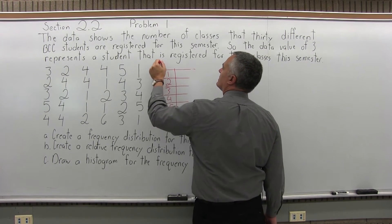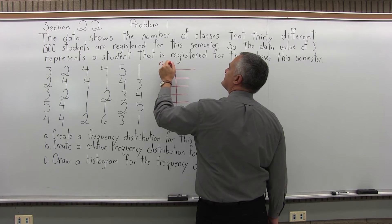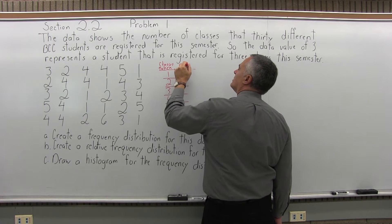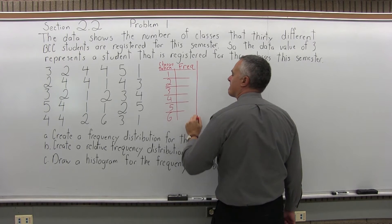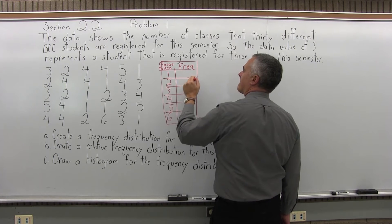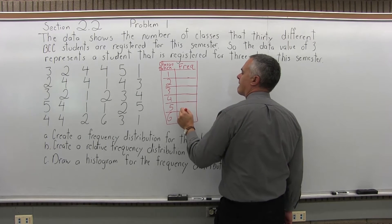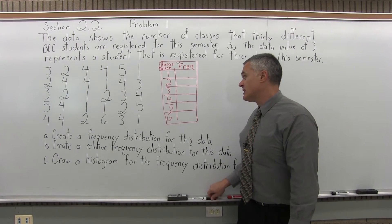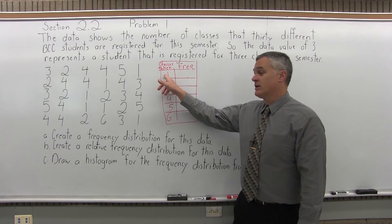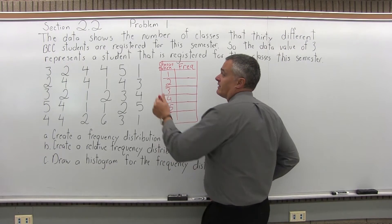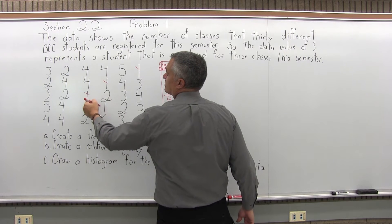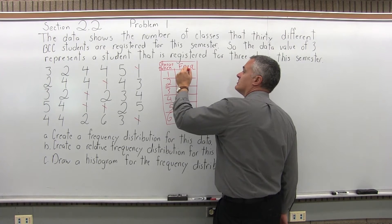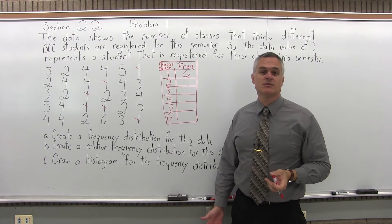We can label the columns too: classes taken. And then the second column will be frequency. Now we want to count how many students out of the 30 signed up for one class in the semester. Count carefully: 1, 2, 3, 4, 5, 6. There were 6 different students that were registered for only one class during the semester.